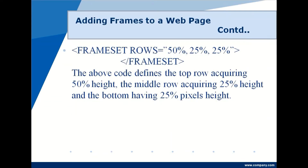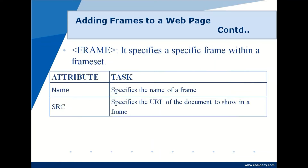The value list can also be specified in terms of percentage with respect to the window — for example, rows equal to 50%, 25%, 25%. The window will be divided into three rows: the top row occupies 50% of the height, the middle row 25%, and the bottom row 25%. Once the window is divided into frames, further configuration is done using the frame tag.